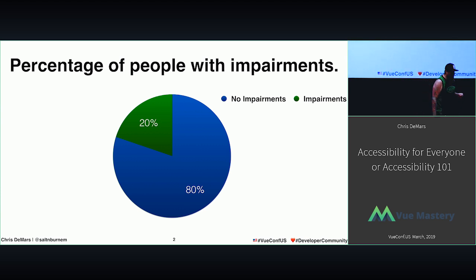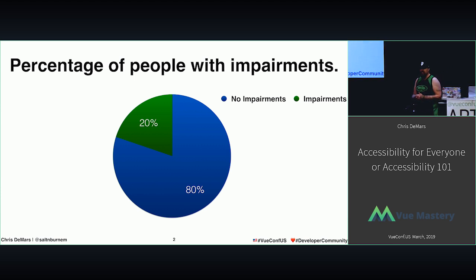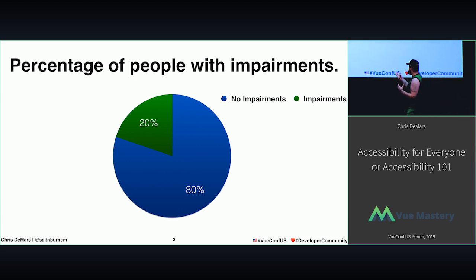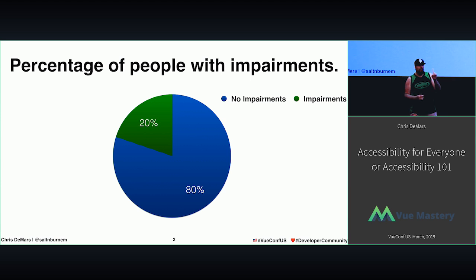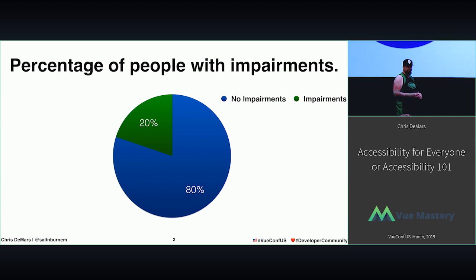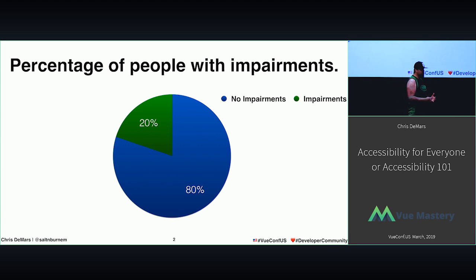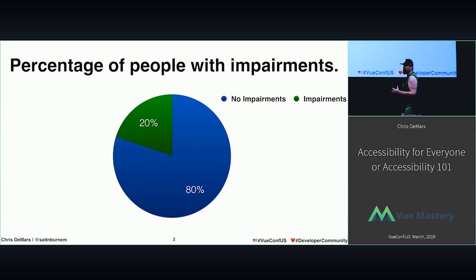Did you know, were you aware that 20% of the people out there in the world have some type of disability? 20% is a small number, right? When you compare it to 80%, it's just a little number. But with 7 billion people around the world, give or take, 1.4 billion of them have some type of disability.